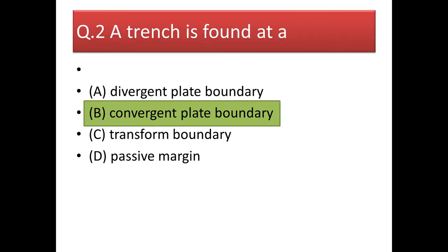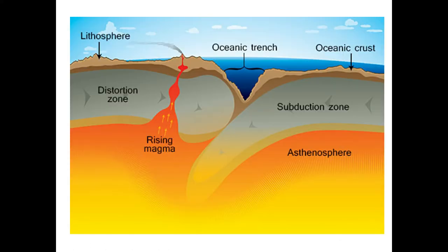Next question: a trench is found at — whenever you find a trench, you will find it in a convergent plate boundary only, be it ocean-ocean convergence or ocean-continent convergence. A trench is a characteristic feature of a convergent plate boundary. As you can see from the figure, in a convergent plate boundary when two plates collide, the denser plate goes down into the mantle.